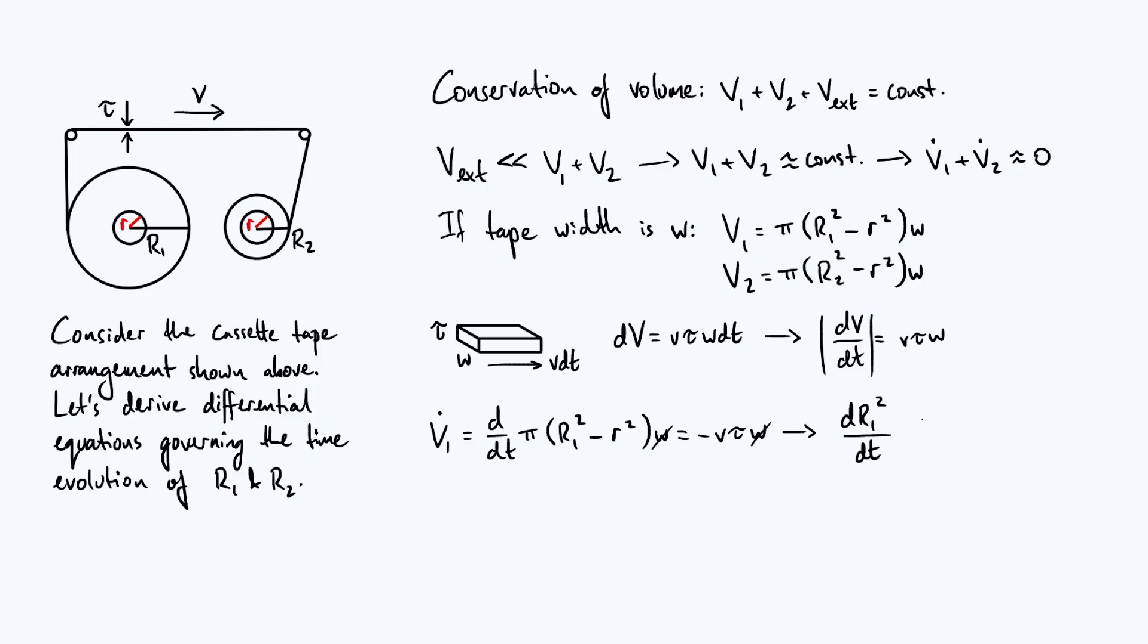so the left hand side is going to end up as d(r1 squared) by dt, so the rate of change of not r1 but r1 squared. The right hand side is going to end up as minus v τ over π.